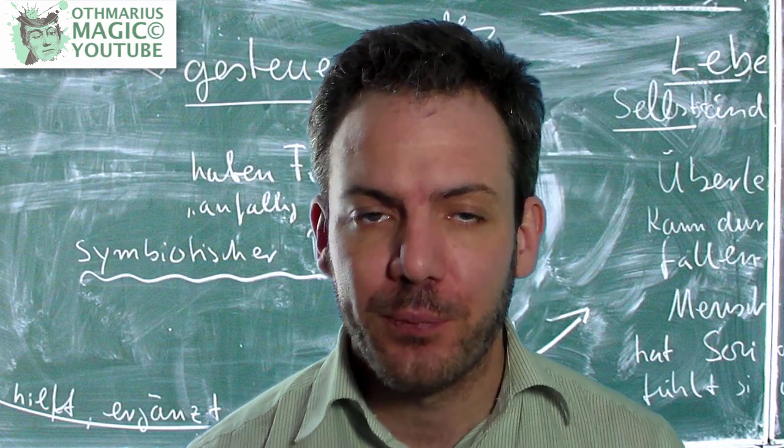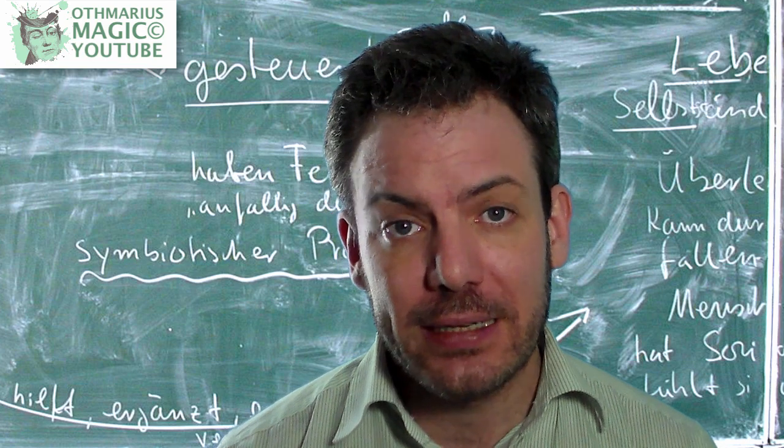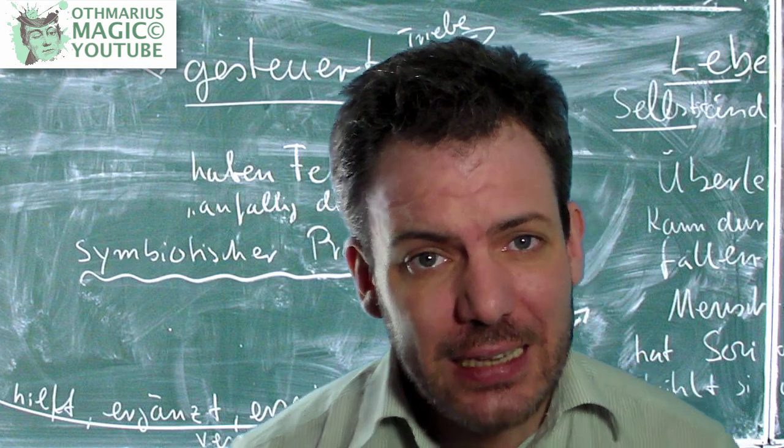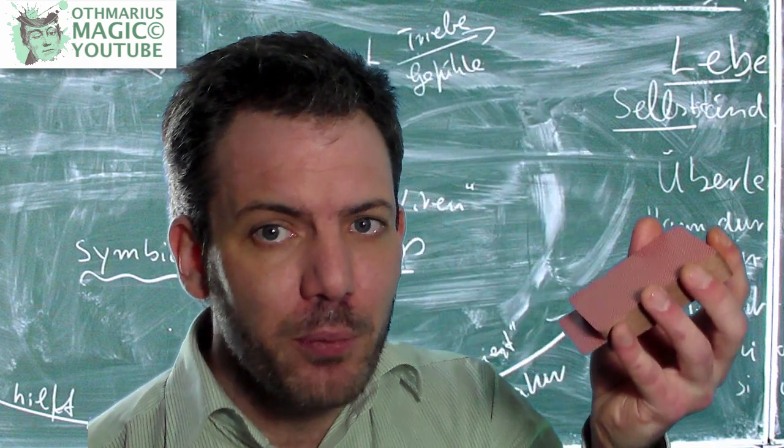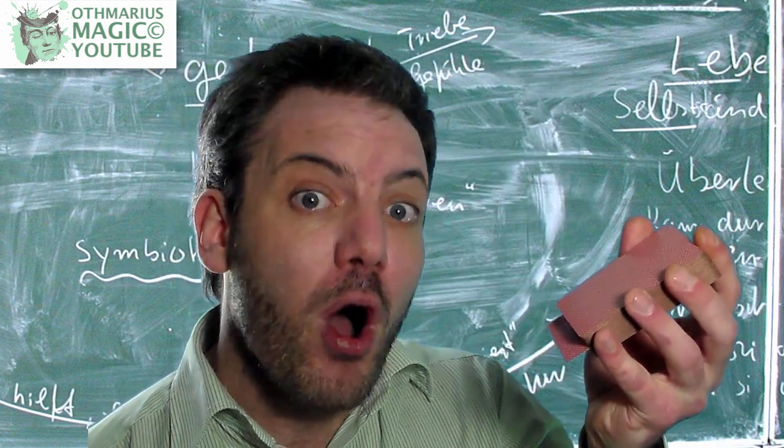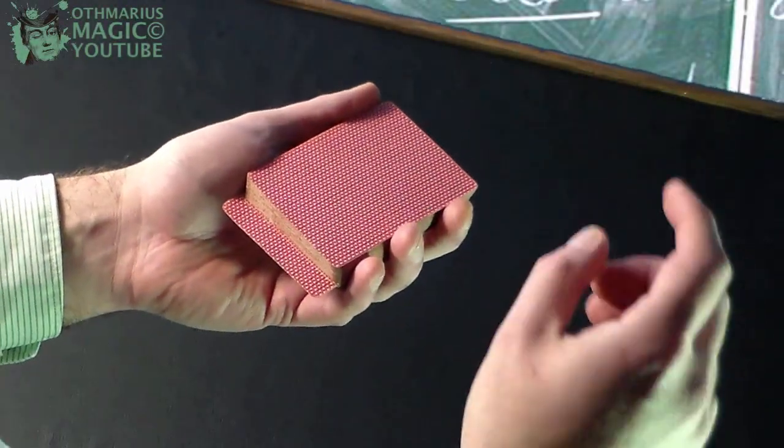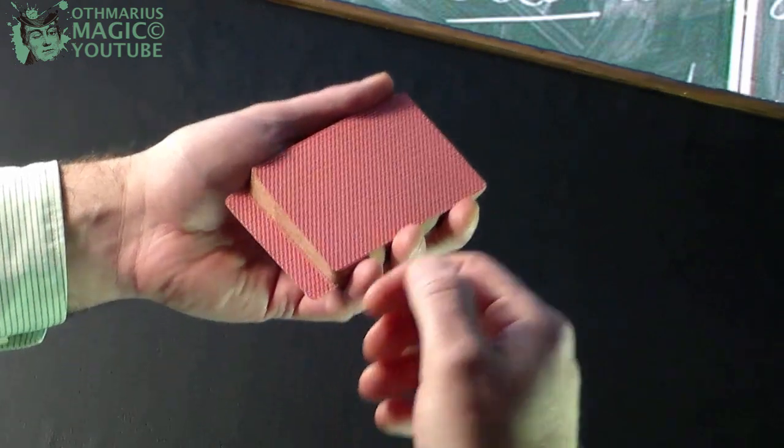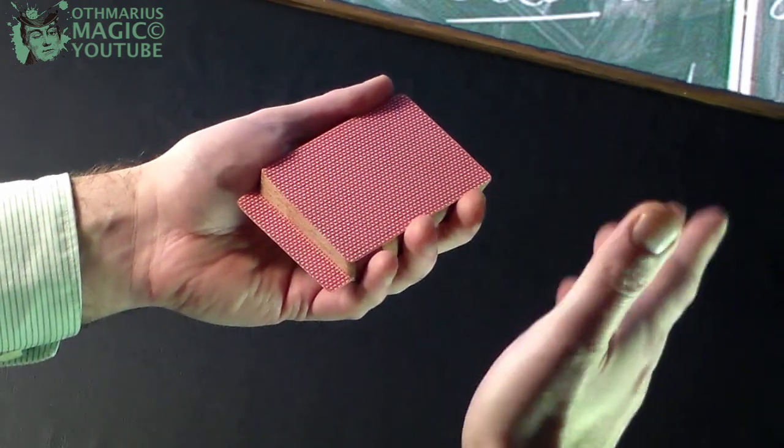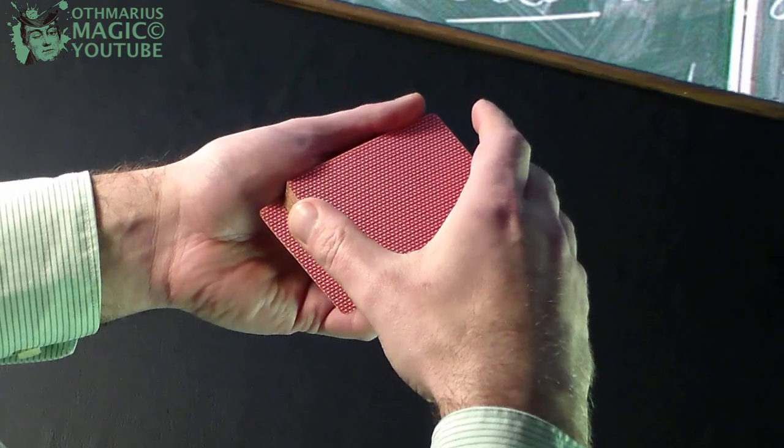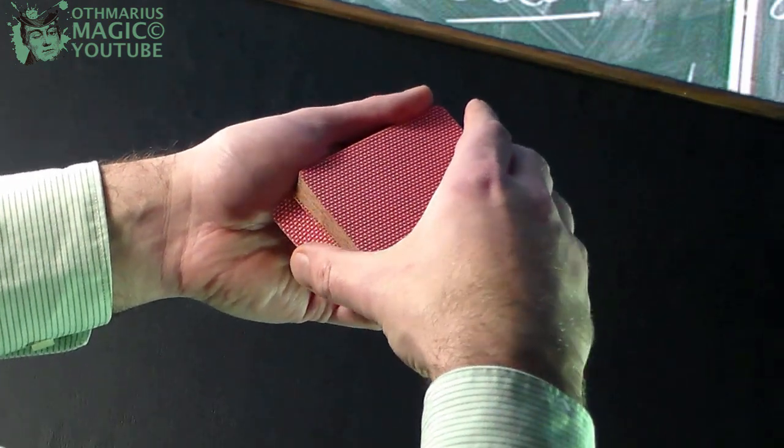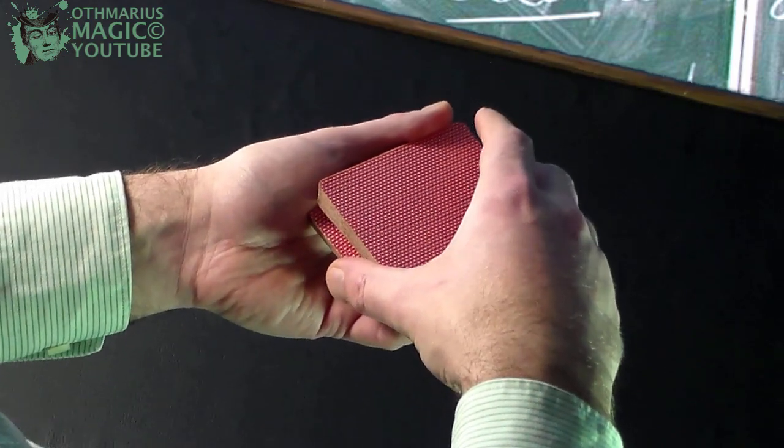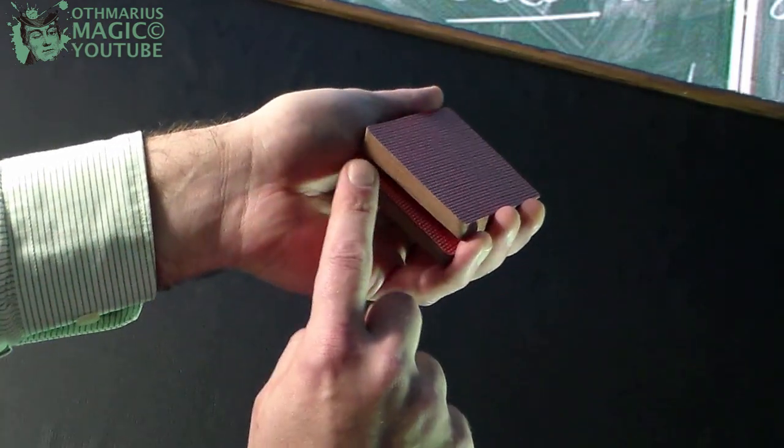However, we are not done here yet. Because many card control techniques are based on catching a break with a so-called in jog. And that is a card that is sticking out of the deck a little bit towards the direction of the performer. So, one card sticking out of the deck pointing to you. If you now approach the deck with your right hand as if to grab an overhand grip, simply push the in jog slightly down with your thumb and push the card square with the rest of the deck. Automatically, this motion creates a nice break.